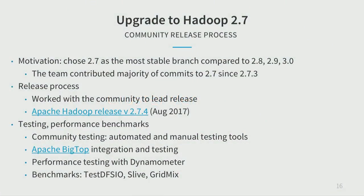Last year we upgraded to Hadoop 2.7. We put in effort helping the community release versions 2.7.4, 2.7.5, and 2.7.6, and also benefited from community testing. There are many tools for manual and automated testing; we integrated with Apache BigTop and used internal performance testing with Dynamometer, which Eric will discuss. We also used standard Hadoop benchmark tools: DFS-IO, S-Live, and GridMix.